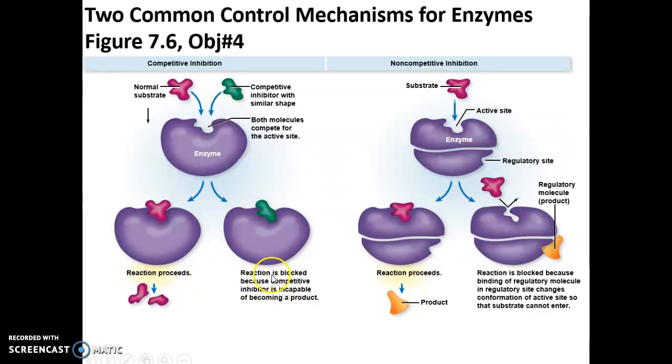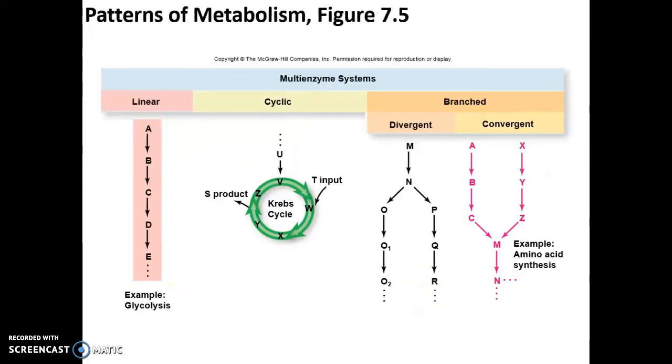Non-competitive inhibition has a regulatory product. All right, the regulatory product is going to bind to a different site on the enzyme. And that physical bonding is going to alter the active site. So here, without the regulator molecule, the active site is in the proper shape and you can have the reaction occur. Over here, the regulatory molecule binds to the enzyme and it alters the active site. And therefore the substrate cannot lock in and that reaction is inhibited.